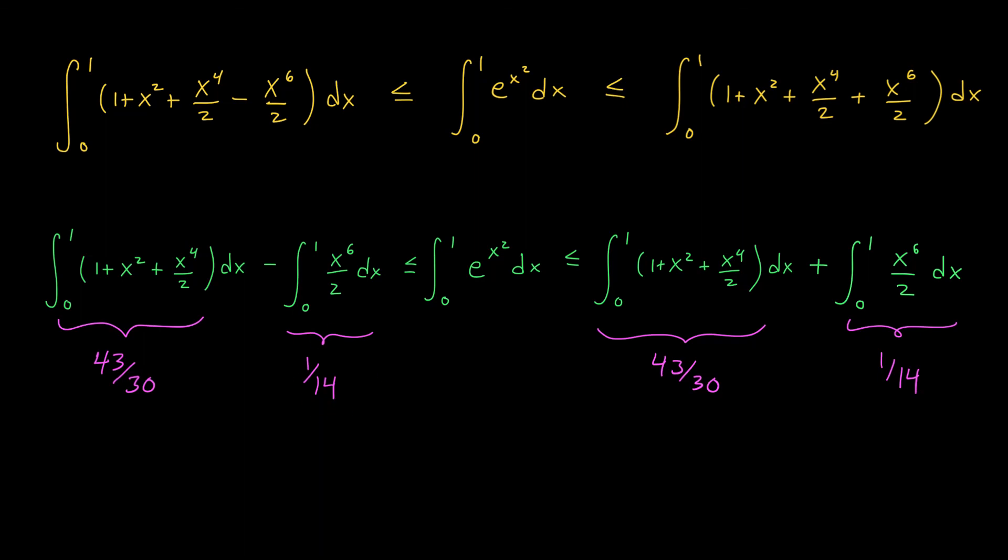So by separating out that error, not only do we get an approximation for our integral, but we get a range of possible values on the error. Maybe this was expected, but the error that we get in approximating this integral turned out to be the integral of our original error term x to the 6 over 2. So what we conclude is that the integral from 0 to 1 of e to the x squared dx sits somewhere between 43 over 30 minus 1 over 14, which rounding down is approximately 1.361 and 43 over 30 plus 1 over 14, which is approximately 1.505.